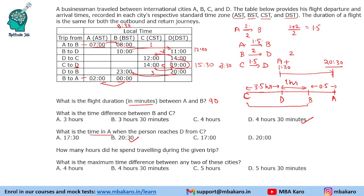Question: How many hours did he spend travelling during the given trip? He made A to B (1.5 hours), B to D (2 hours), D to C (1.5 hours), C to D (1.5 hours), D to B (2 hours), and B to A (1.5 hours). So 1.5 multiplied by 4 gives 6, plus 4 gives a total of 10 hours of journey.